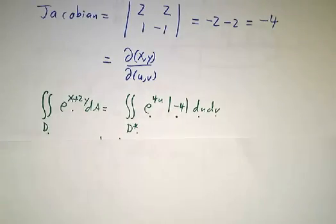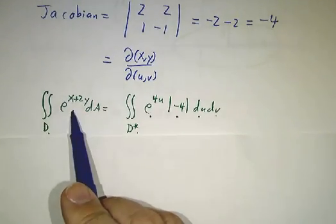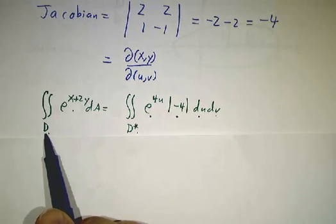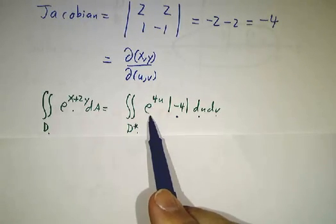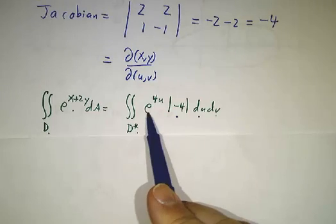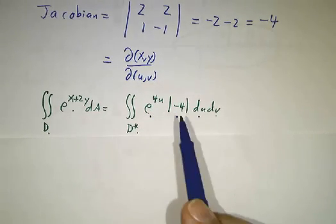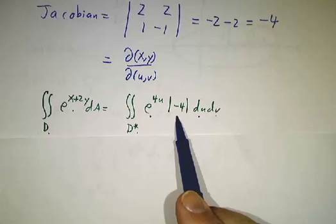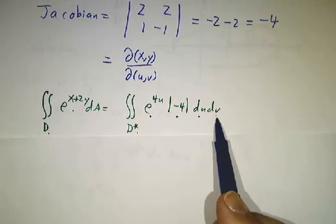So the integral of the original function over the original region is the integral of the function rewritten in terms of u, that's e to the 4u, times the absolute value of the Jacobian, du dv.